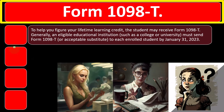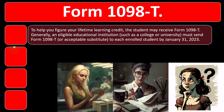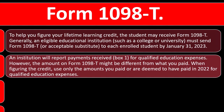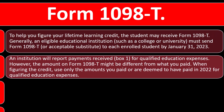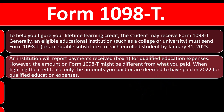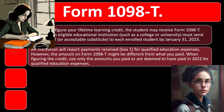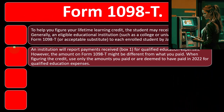Form 1098-T helps you figure your Lifetime Learning Credit. An eligible educational institution such as a college or university must send Form 1098-T to each enrolled student by January 31, 2023. The institution reports payments received in Box 1 for qualified education expenses. However, the amount on Form 1098-T might differ from what you actually paid — when figuring the credit, use only the amounts you paid in 2022 for qualified education expenses.